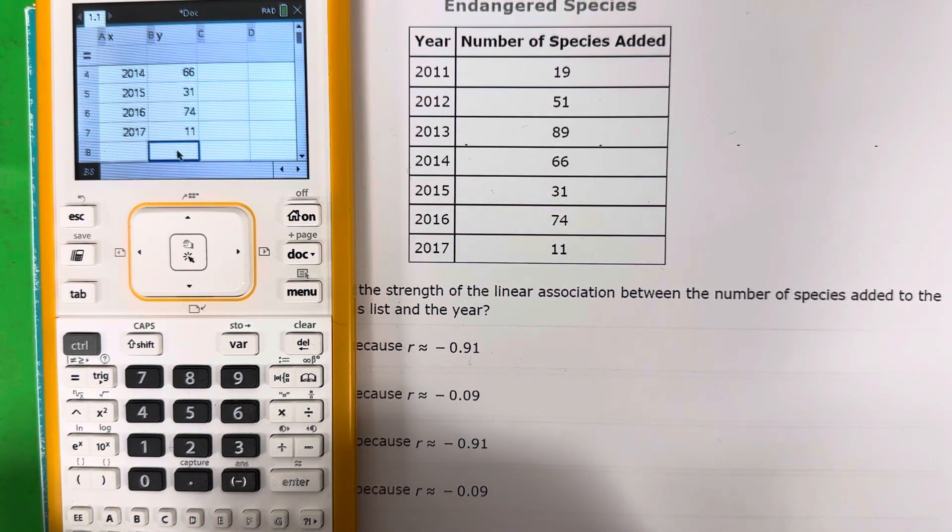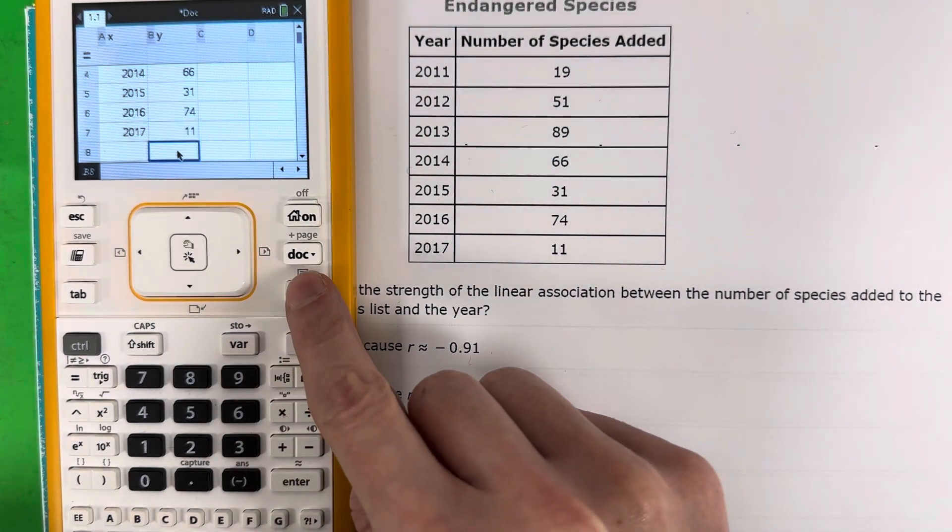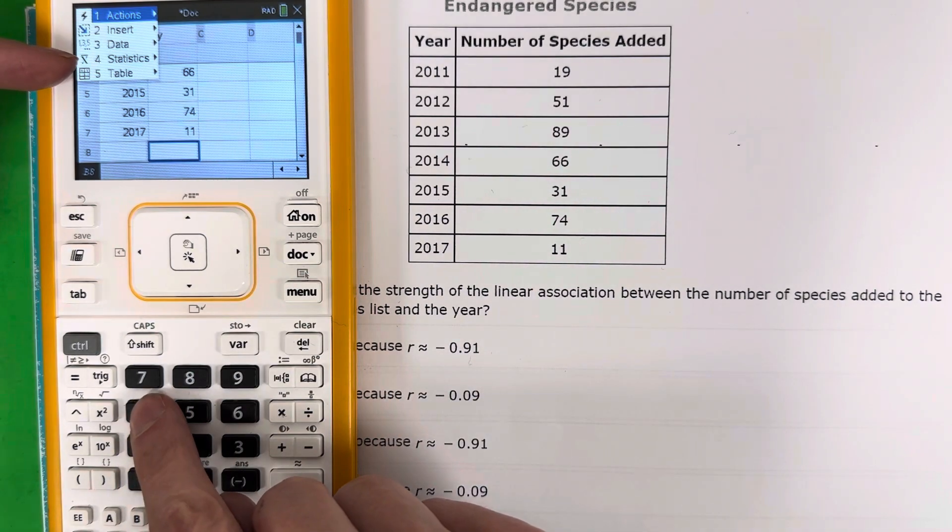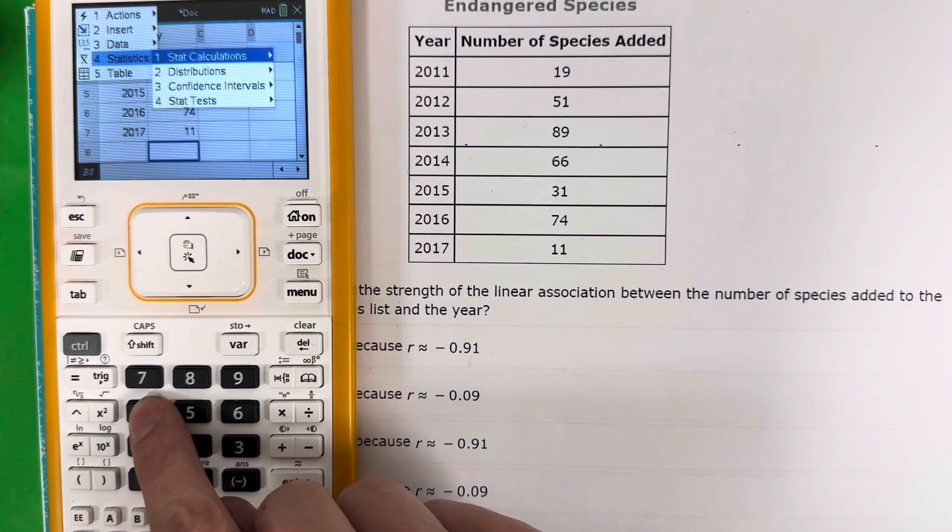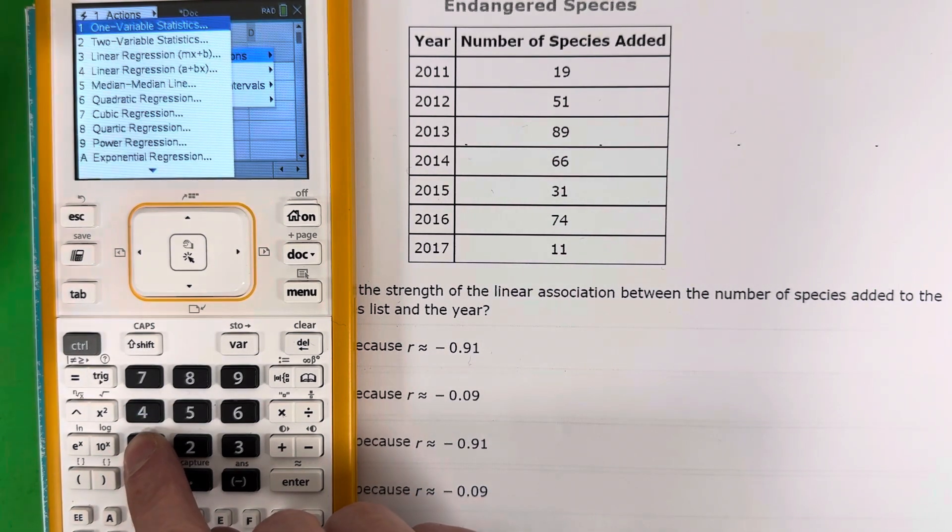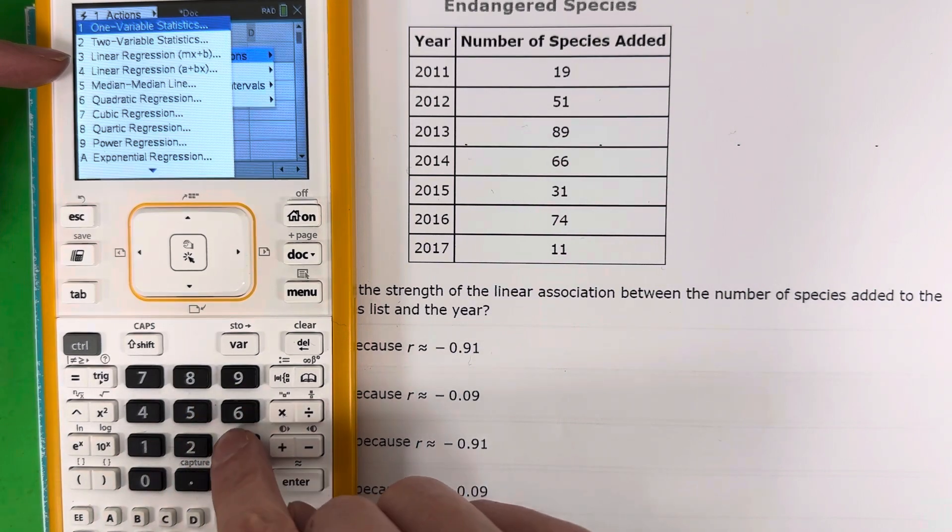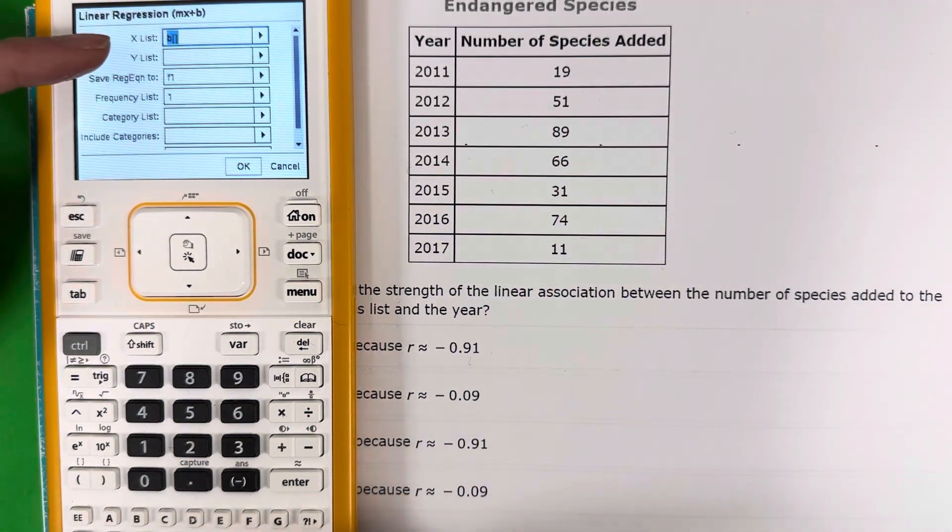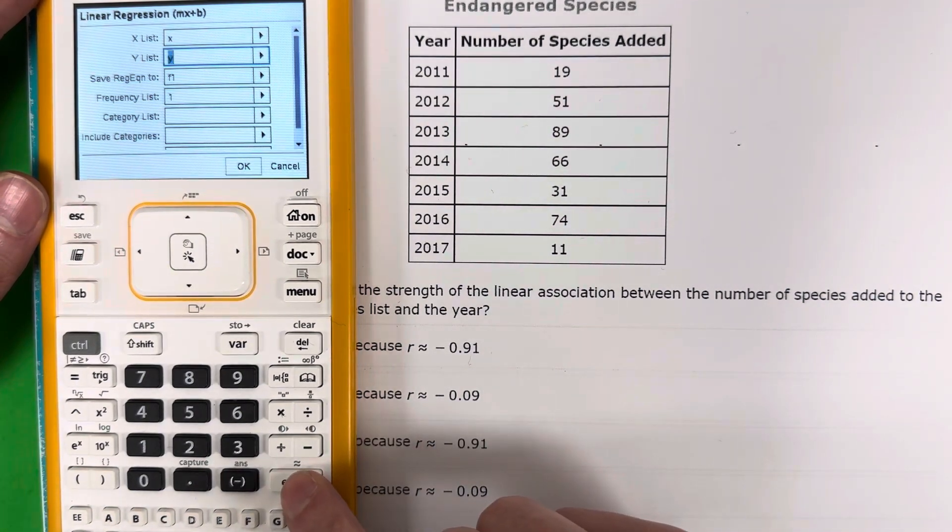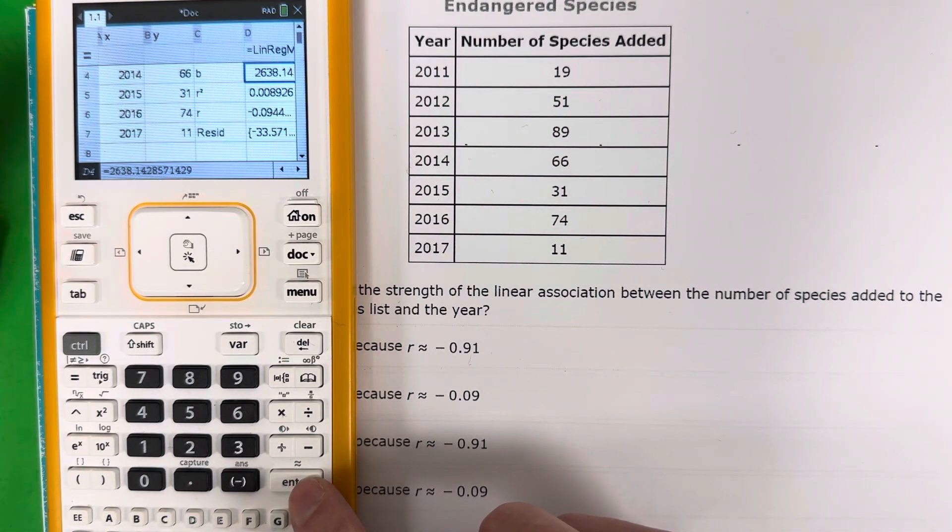Okay, now to move on to find the correlation coefficient, you're going to push menu. You want the number four, the statistics. So go ahead and push number four. And you're going to want stat calculations, which is the number one. And you're going to want number three, the linear regression. Here, you need to write X, go down, write Y, and then push enter, enter. And there you go.